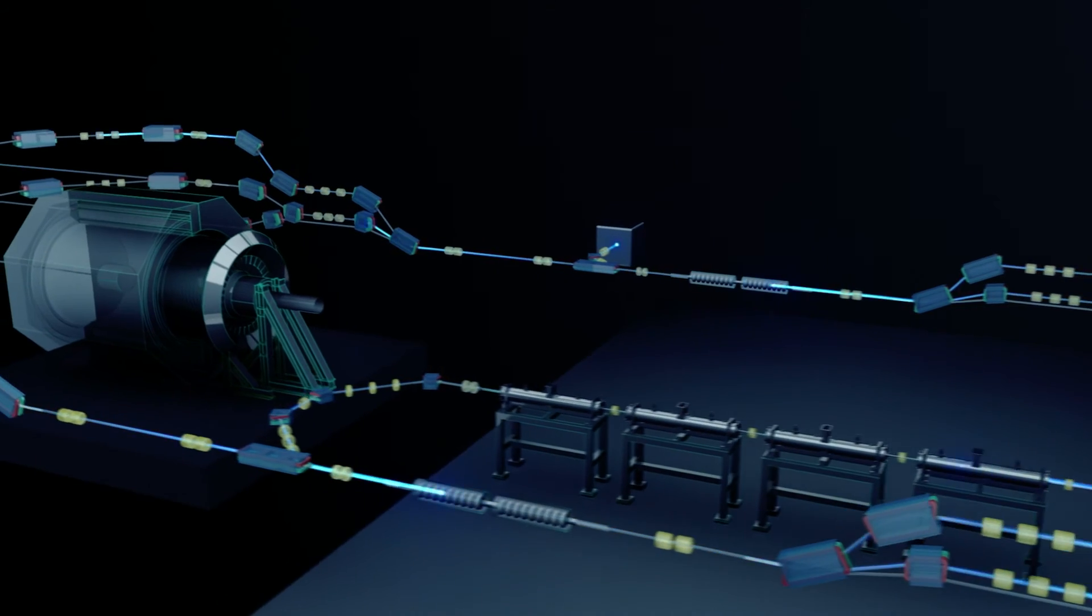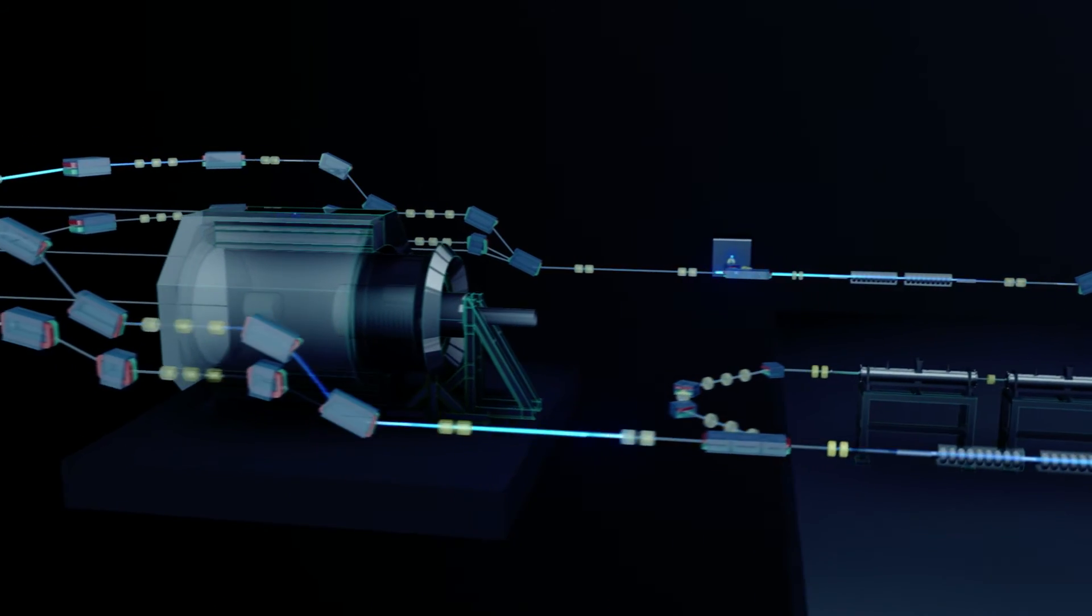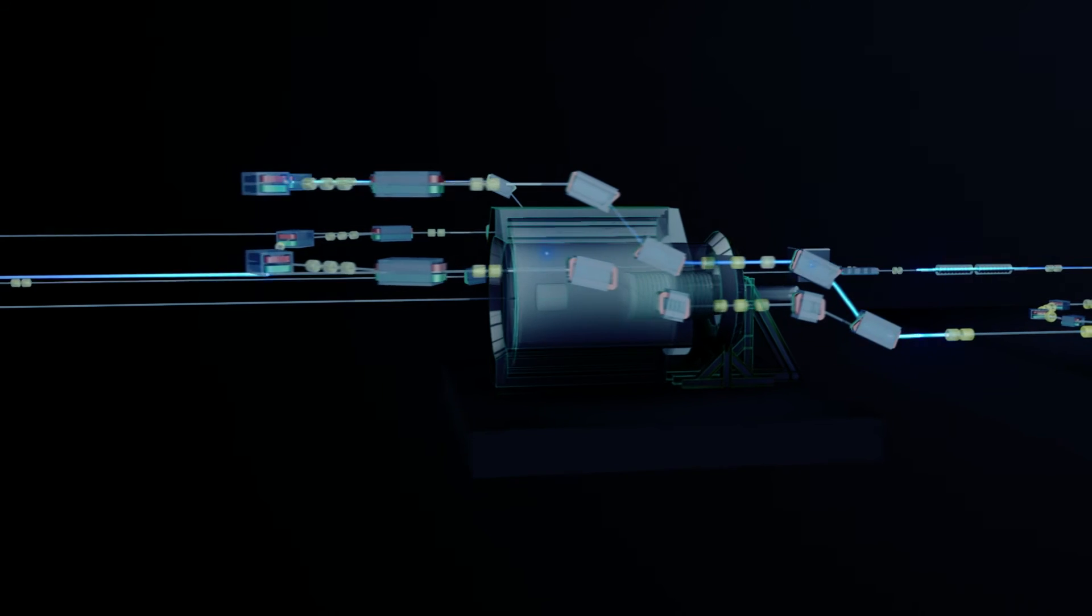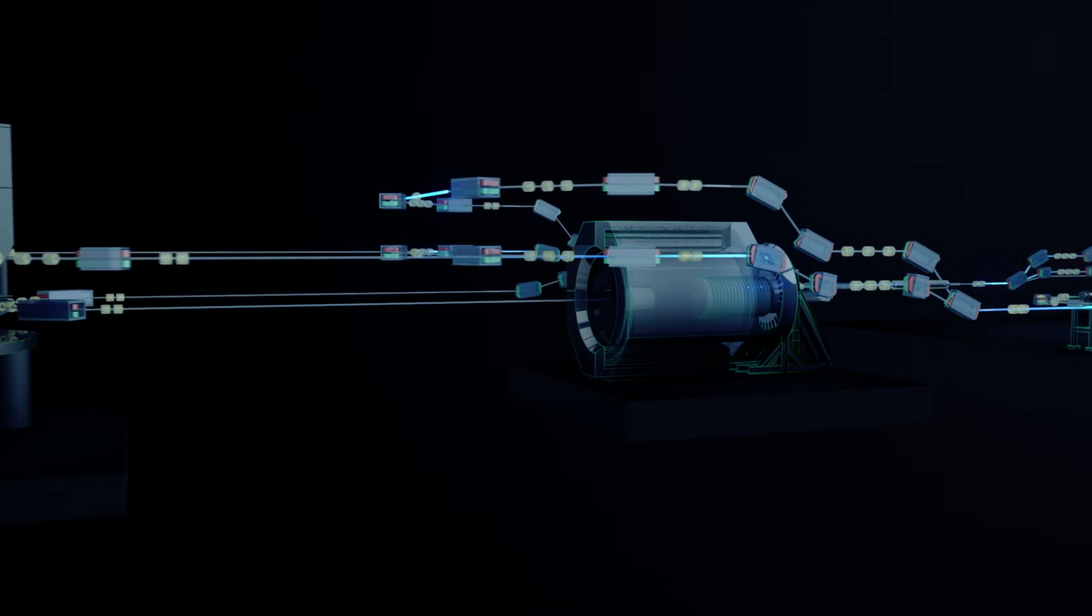In this way, after two passes through both of the cryomodules, 100 MEV of energy are recovered. The remaining beam is dumped at 5 MEV.